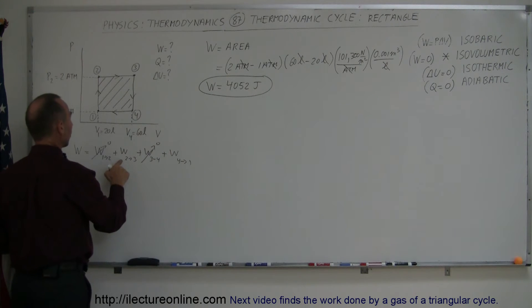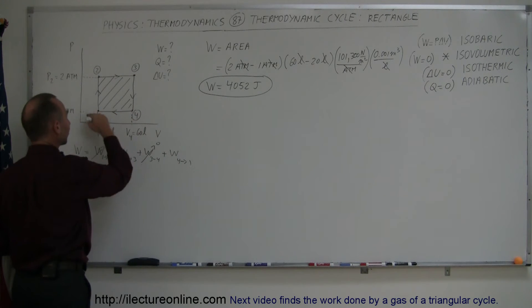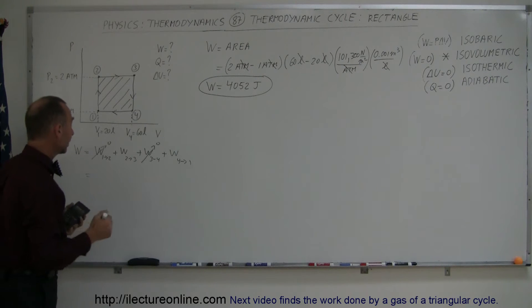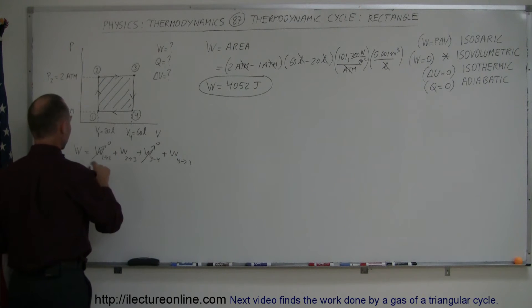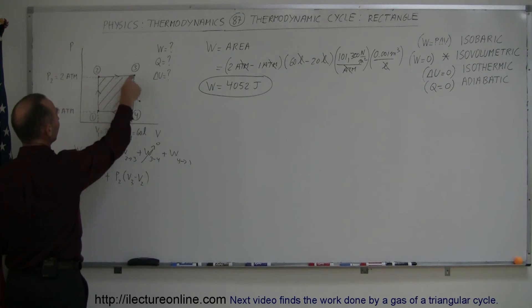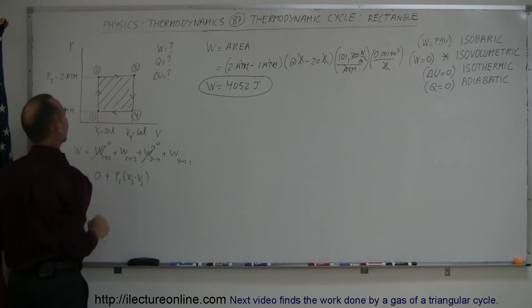So, since the work done from 2 to 3 is an isobaric process, and the work done from 4 to 1 is an isobaric process, because the pressure doesn't change there, we can then say that that is equal to the pressure at 2 times the change in the volume, that would be the volume from 3 minus the volume at 2. So what I'm doing here to find the work done in this part of the process right here, or this part of the cycle, is that I take the pressure at this point and multiply times the difference in volume, the volume at this point minus the volume at that point.